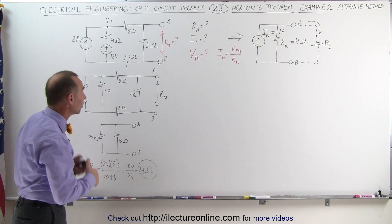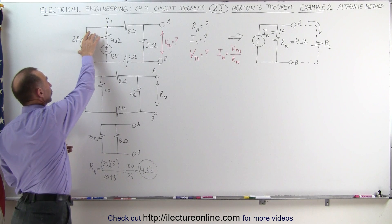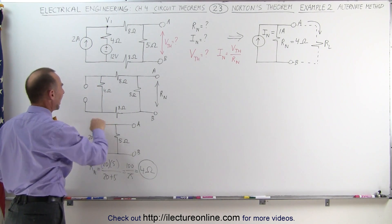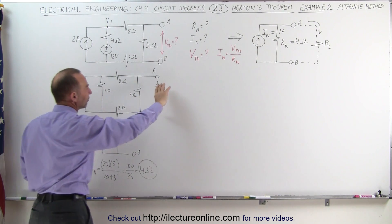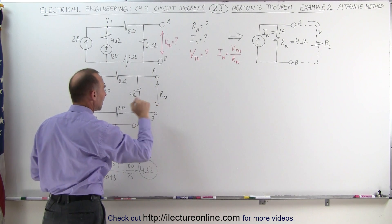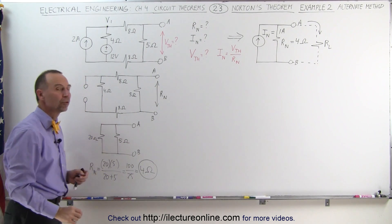Finding the Norton resistance is exactly the same. Remove the current source, we set the voltage source equal to 0, in other words we short out the voltage source, and then with the remaining circuit we try to find the Norton resistance by measuring the resistance between terminals A and B. When we did that we ended up with 4 ohms.